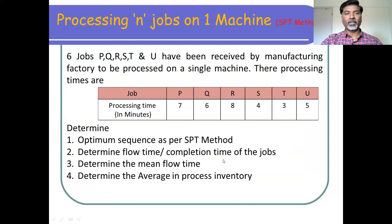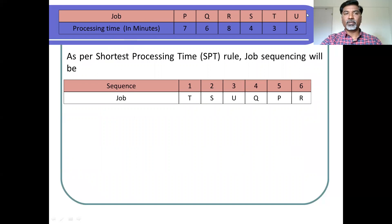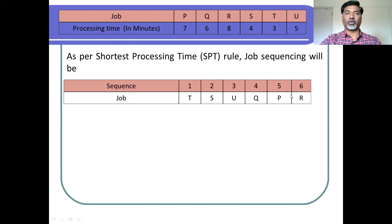To solve this, we have the jobs and their processing times. As per the shortest processing time rule, you observe all processing times of the given n jobs, and the job with the minimum processing time is processed first. In this case, job T has the minimum processing time, so job T is processed first. Then job S has the next minimum time, so job S is at sequence number 2. Job U has the third minimum processing time, so job U is processed third. In this fashion, you identify the job sequence from minimum to maximum processing time.